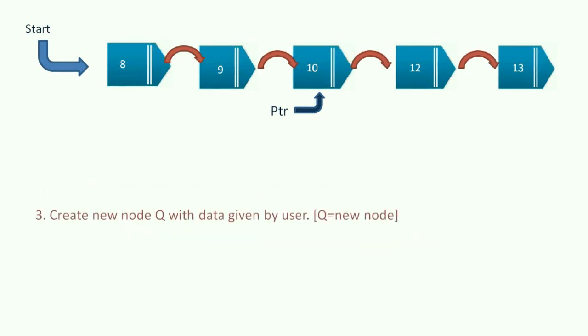As you can see, PTR now points to the desired node. Now, create a new node Q with the new data 11.